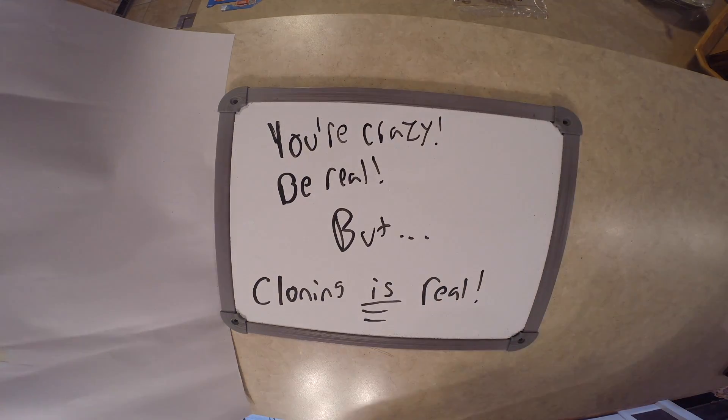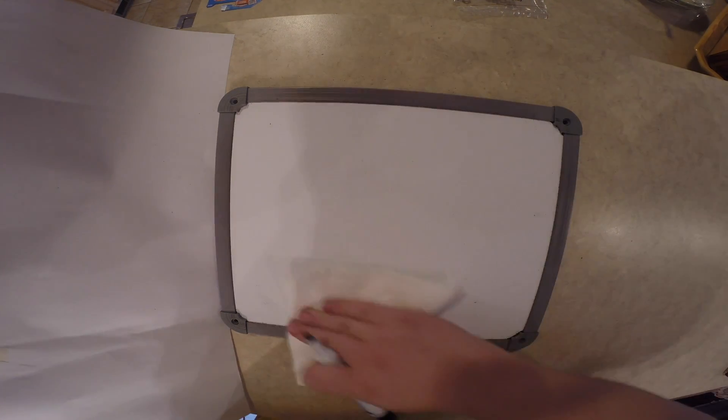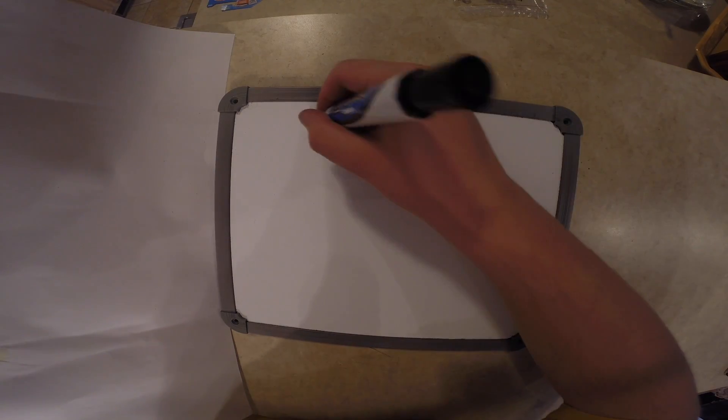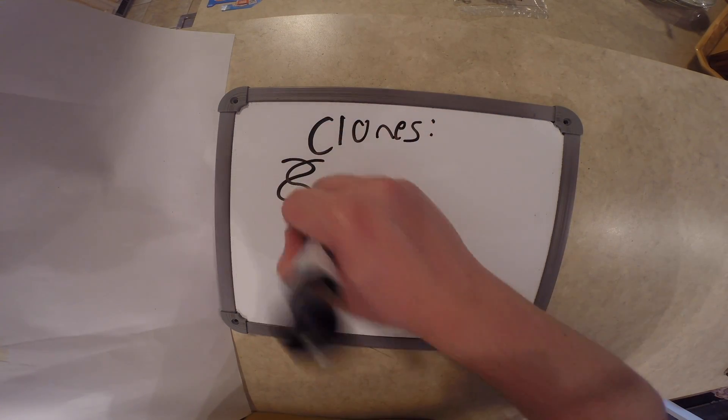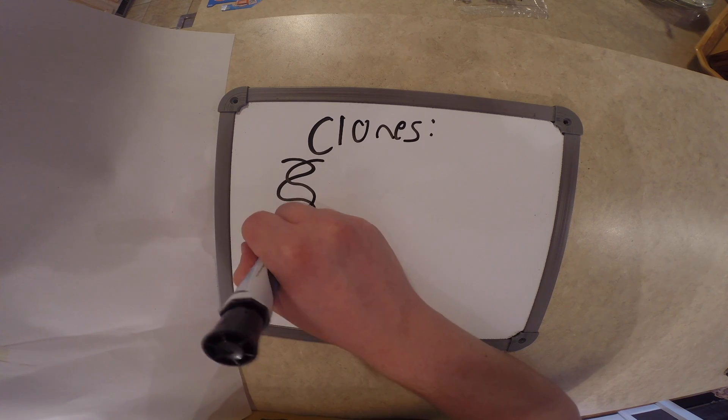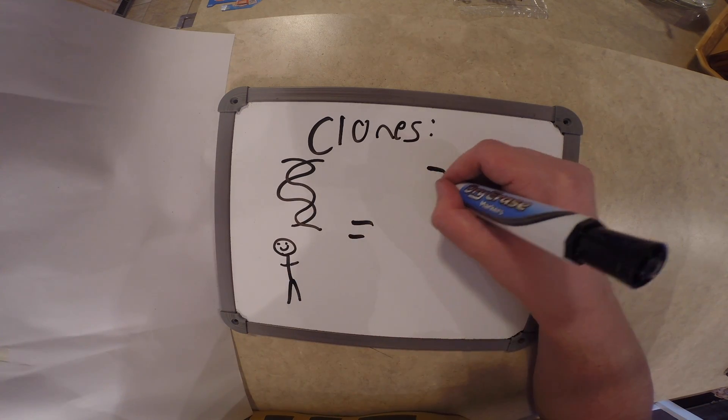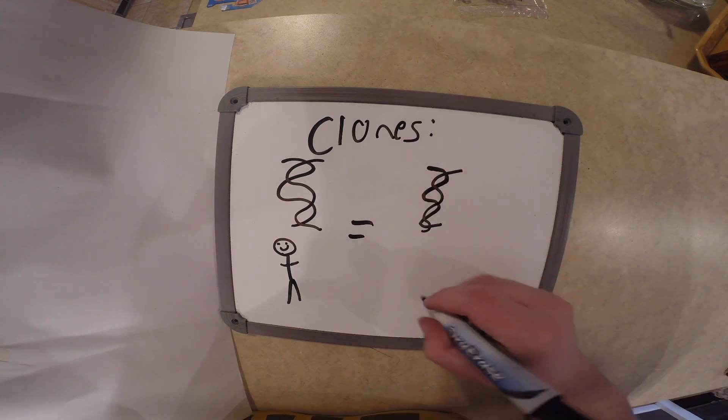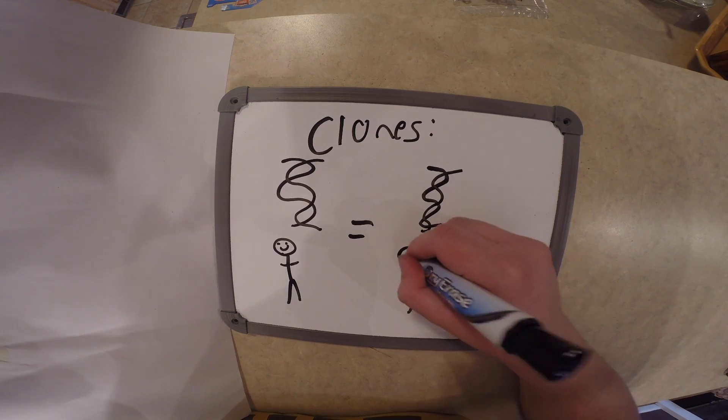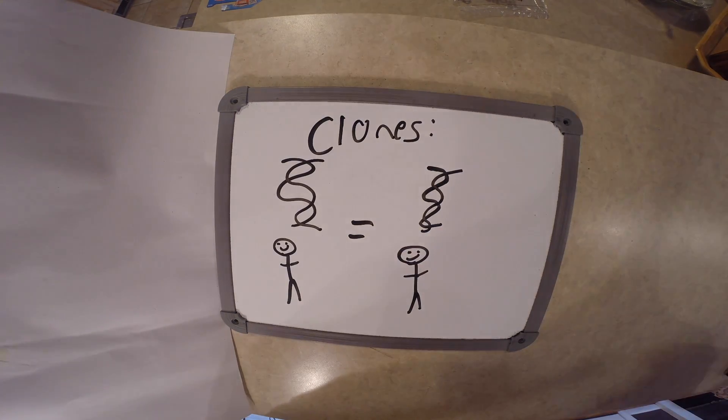And the power of cloning has more than enough chances to affect all of us in the future. First, let's define cloning. Cloning is used to create clones, biological beings that have the exact same genetic makeup as another being of the same species. It's not hard to find an example of a clone. Identical twins are an example of naturally occurring cloning.